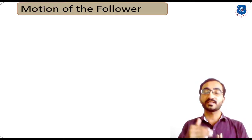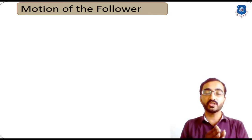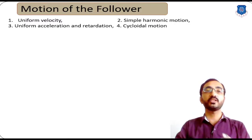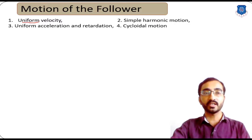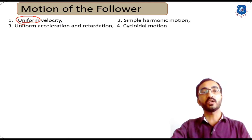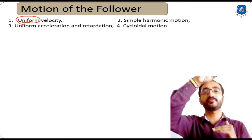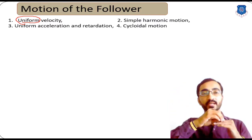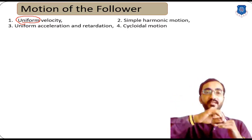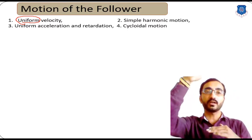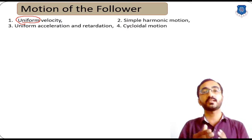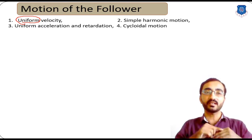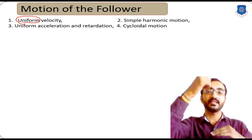In the case of a follower, a similar pattern is followed and the motion is mainly classified into four categories. The first one: the body is moving with uniform velocity — meaning constant velocity — either the follower will move with constant velocity during upward motion (called the rise phase) or during downward motion (called the return phase).